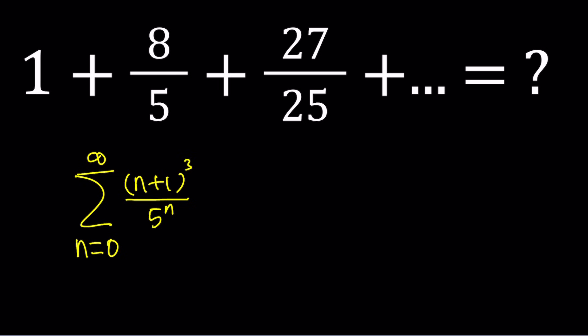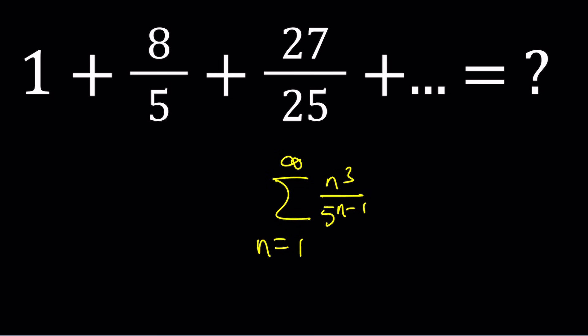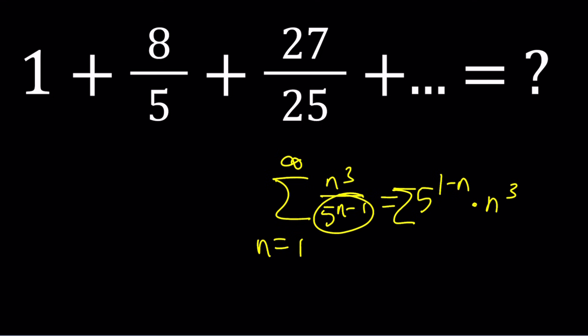If you want, you can also start with n equals 1 — it's totally up to you. If you do, it's going to look like the sum of n cubed over 5 to the power (n minus 1), which is perhaps more meaningful because n equals 1 represents the first term. You can also write it as n cubed times 5 to the power (1 minus n), which is the same thing.